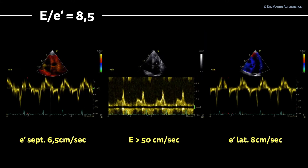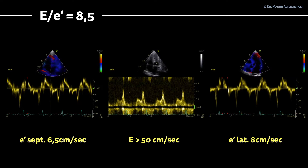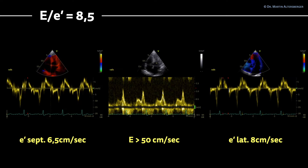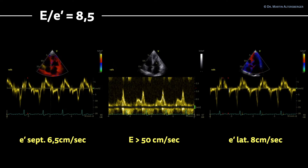Now we assess diastolic dysfunction. Looking at E to E prime ratio: the E prime septal on the left is 6.5 cm/s, which is borderline but actually normal. The E prime lateral on the right is 8 cm/s, which is reduced. The E velocity is above 50 cm/s, so we do not automatically have diastolic dysfunction grade 1, but we need to continue measurements. In this case the E to E prime ratio is below 14, so it is normal.